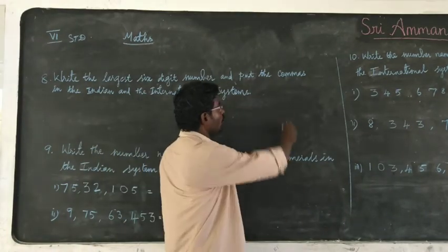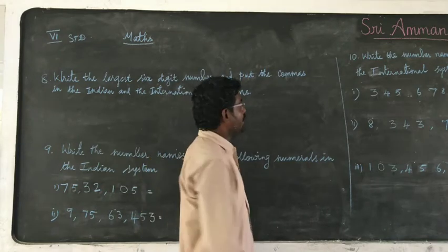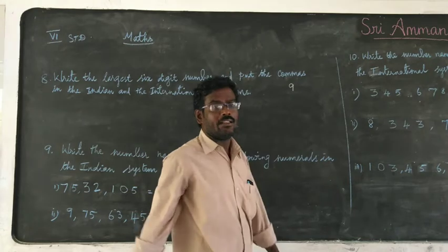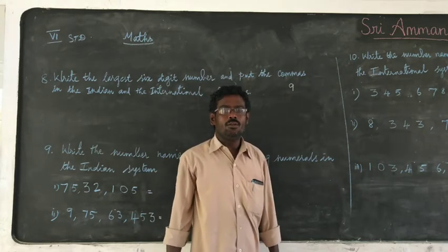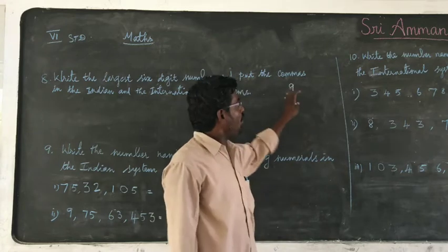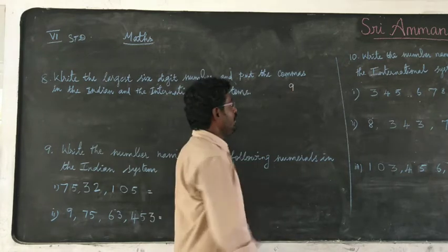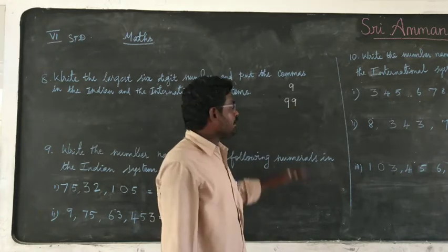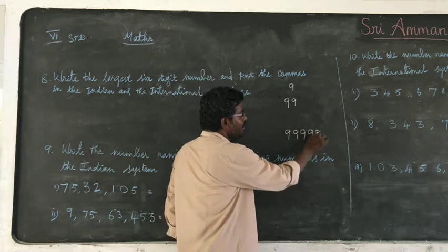Do you know the largest single digit number? Yes, what is it? 9. 9 is the largest single digit number. Okay, is it possible for a 2-digit largest number? Yes, that is 99. So up to 6 digits, the largest number is 9 written 6 times — 999999.